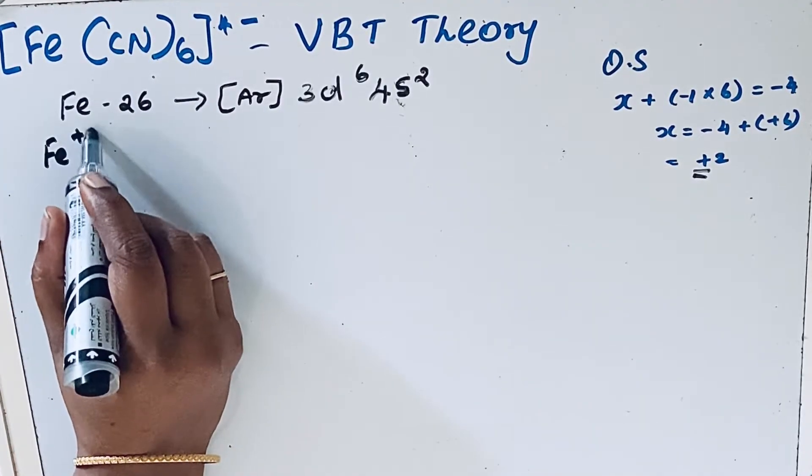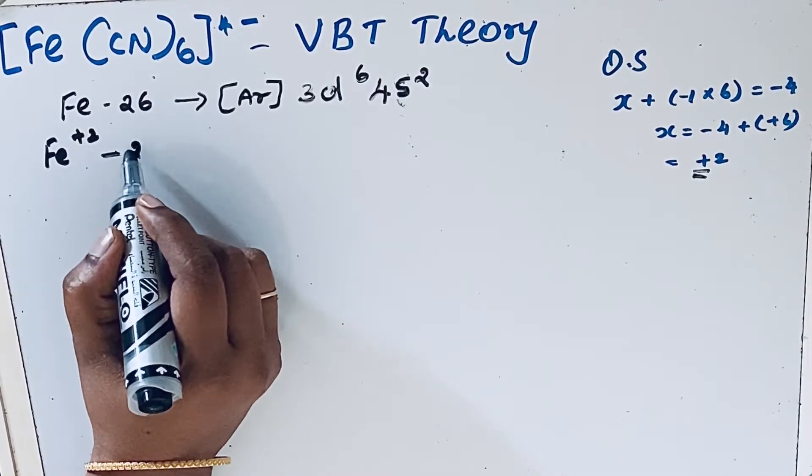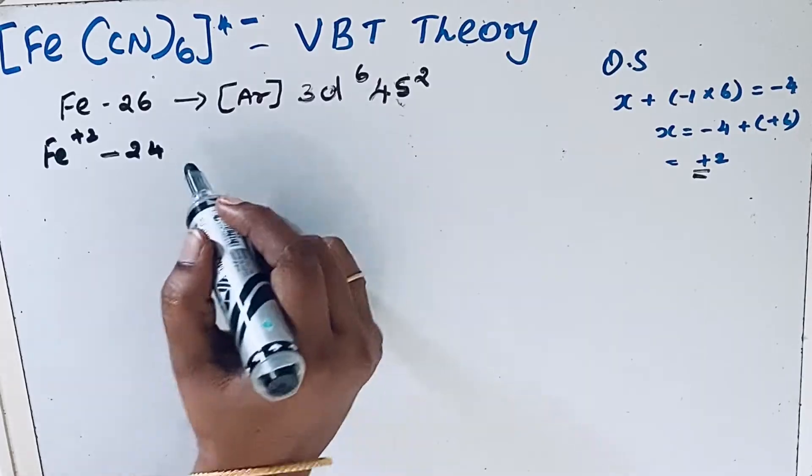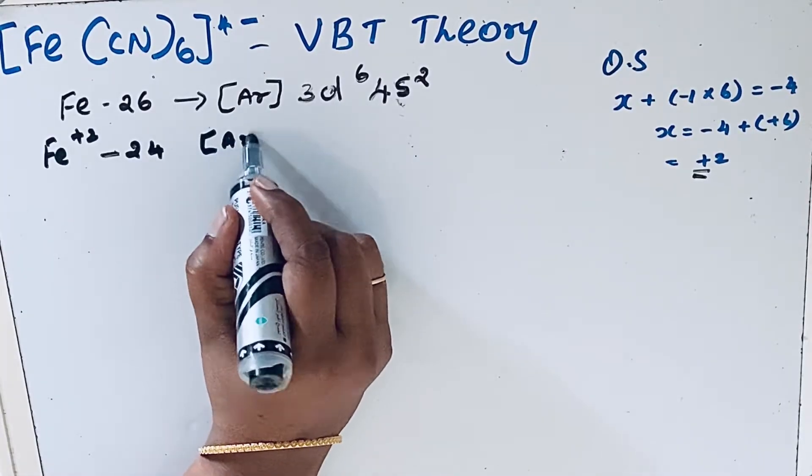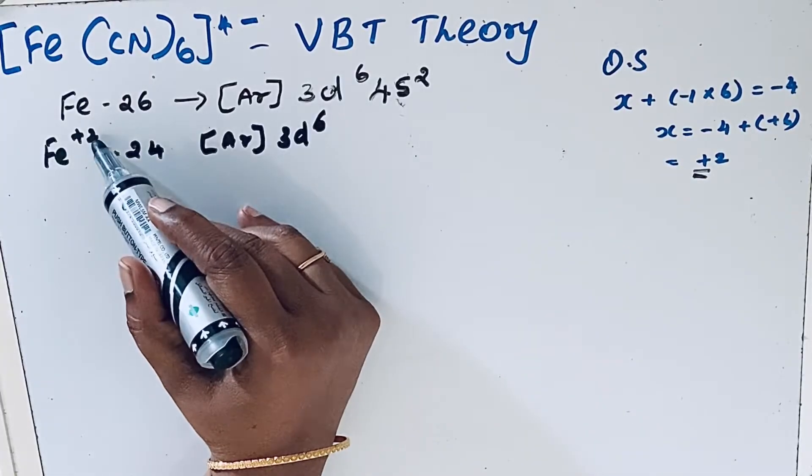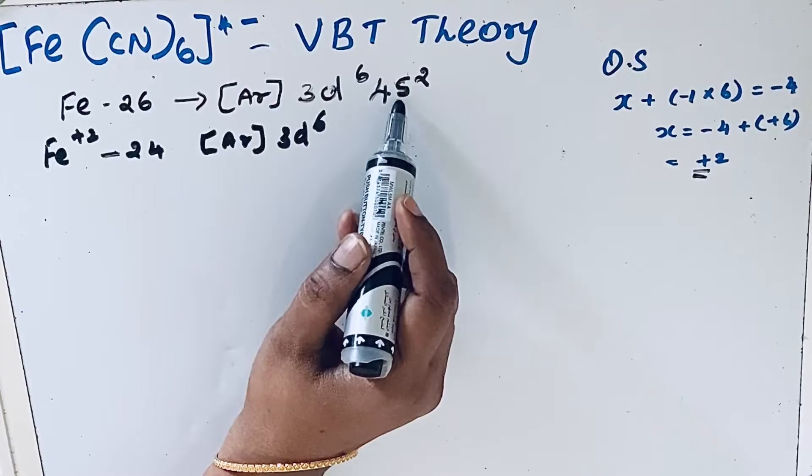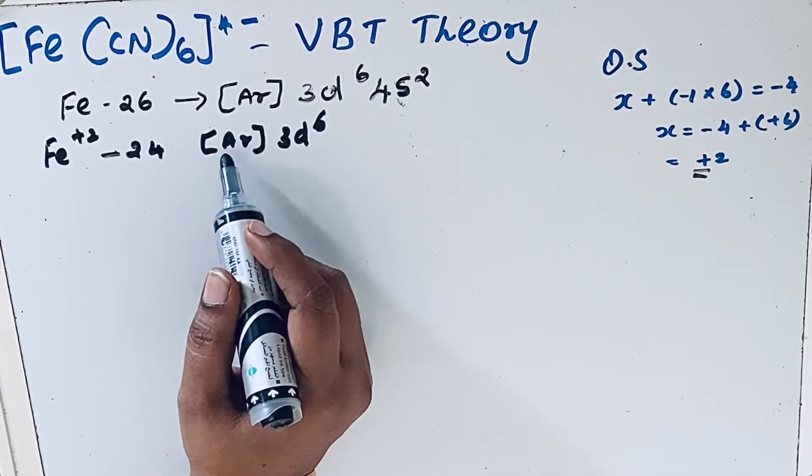+2 oxidation state. Now we can write the electronic configuration. The number of electrons becomes 24, so we write [Ar] 3d6. The two electrons are removed from the outer 4s orbital.